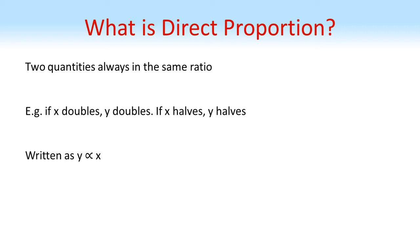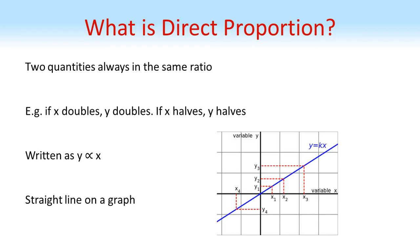Now if we were to draw the graph of two quantities which are in direct proportion to each other, so for example, y and x, we'll always get a straight line on the graph, such as this one.